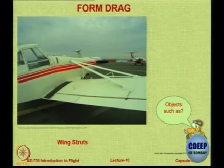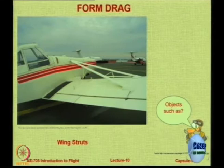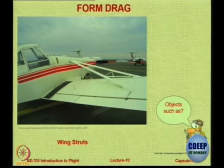Tell me — why do you think this aircraft has wing struts? A student responds: the struts are provided to give support to the wing because the wing seems to be very thin, and because of the bending moments it cannot sustain the loads on its own. That is correct.